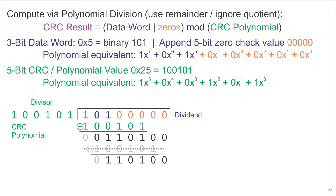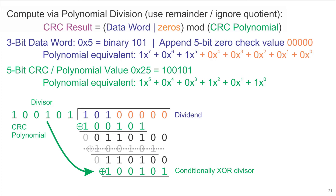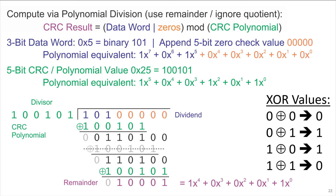One more time, we do a conditional XOR. We see that this time the top bits are both 1, so this will work. We run the XOR and we get a remainder that has the top bit 0 as guaranteed by the algorithm, with the bits that matter being 1, 0, 0, 0, 1 — which is x to the 4th plus 0x cubed plus 0x squared plus 0x plus 1.